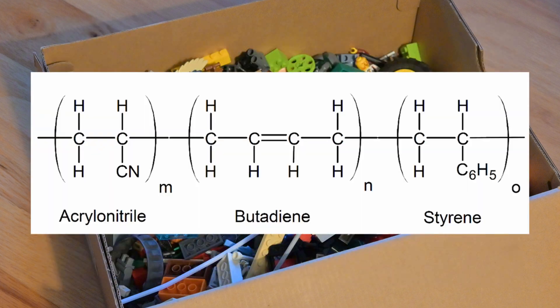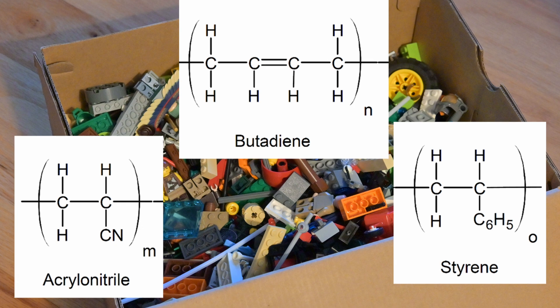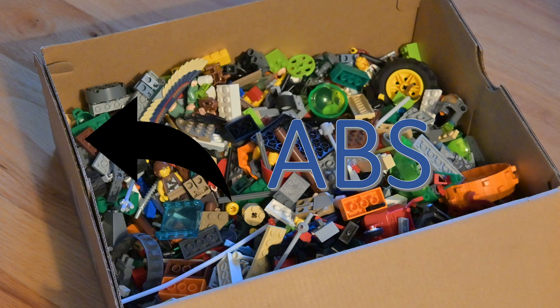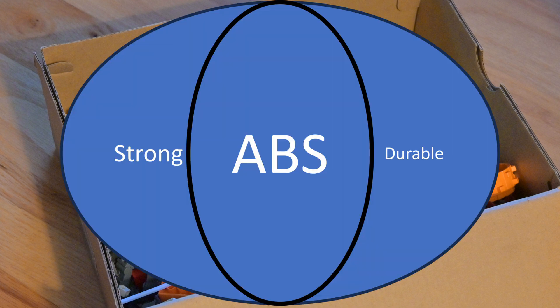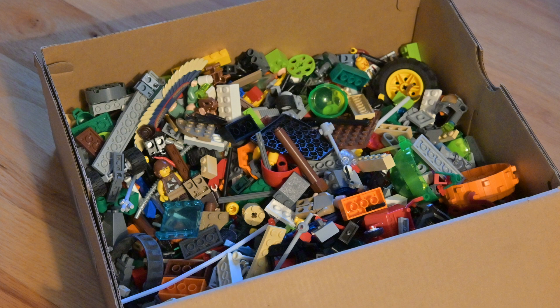Ideally, we would like to break down the polymer back directly into its monomers, essentially reversing the chemical bonds that form ABS. The problem is, the very properties that make this plastic so useful, its stability and durability, also make this process incredibly challenging.